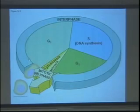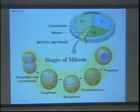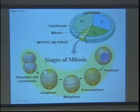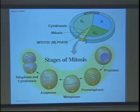Mitosis is divided into a series of stages: prophase, prometaphase, metaphase, and then telophase, followed by cytokinesis. I'm going to walk you through pictures, going through it multiple times and indicating more details each time. There are two other components — besides DNA — that we have to think about in order to understand how the cell divides and accurately partitions chromosomes.